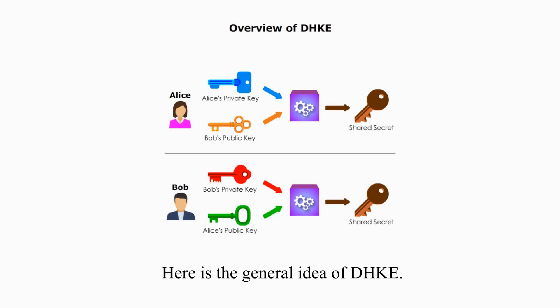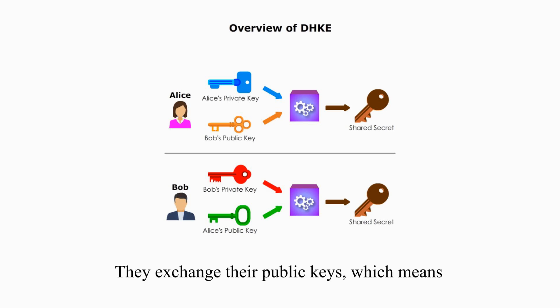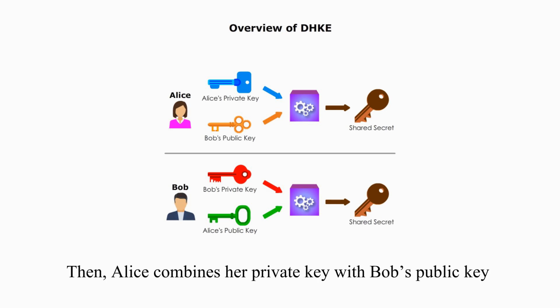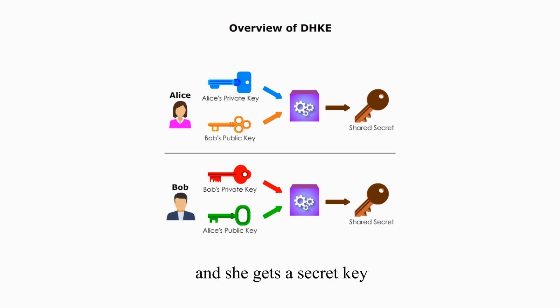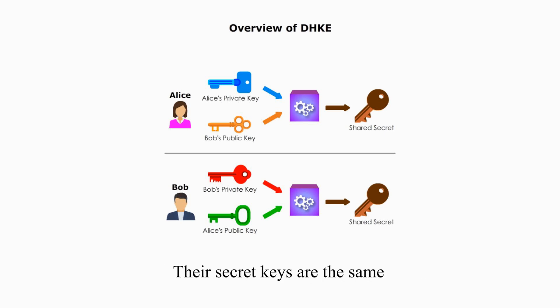Here is the general idea of DHKE. Each party generates a key pair — a public key and a private key. They exchange their public keys, which means Alice gets Bob's public key, and Bob gets Alice's public key. Then Alice combines her private key with Bob's public key and she gets a secret key. In the same manner, Bob combines his private key with Alice's public key, and he gets a secret key. Their secret keys are the same, and it is their shared secret key, which can be used later as the key for their symmetric algorithm.